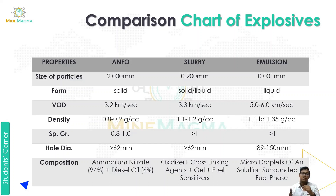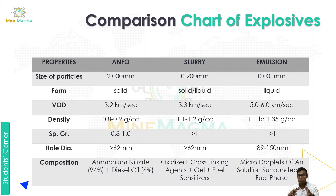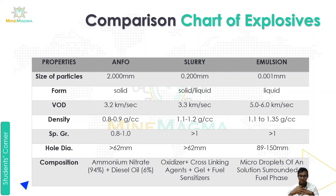Specific gravity: ANFO is 0.8 to 1.0, slurry is greater than 1, and emulsion is greater than 1. For hole diameter: ANFO can be used in holes more than 62 mm, slurry is also more than 62 mm, and emulsion is 89 to 150 mm.